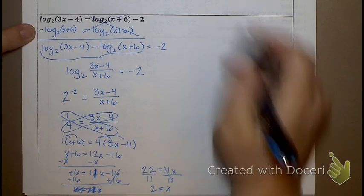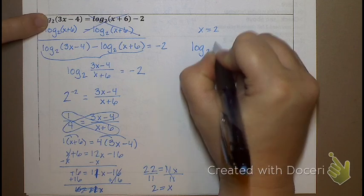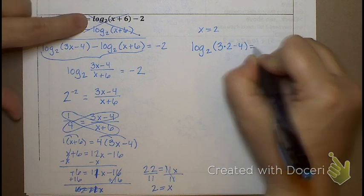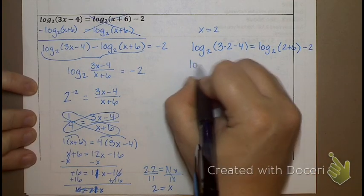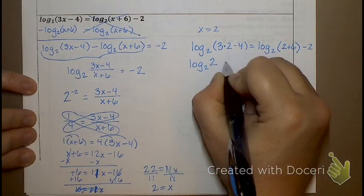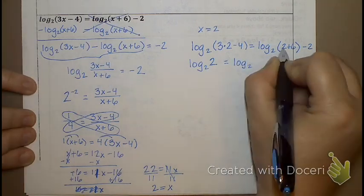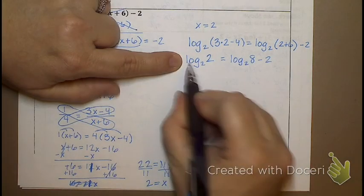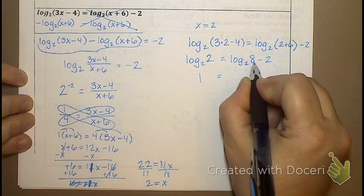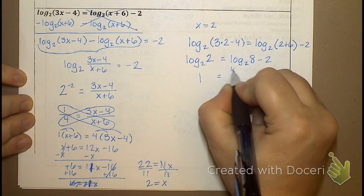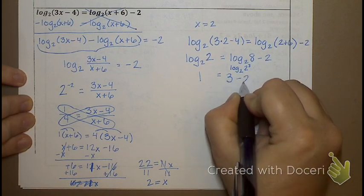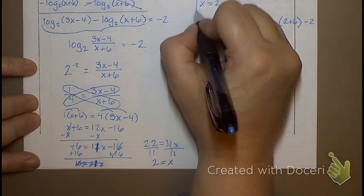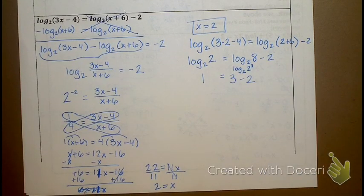Let's check x = 2: does log₂(3·2 − 4) = log₂(2 + 6) − 2? Left side: log₂(2) = 1. Right side: log₂(8) − 2 = 3 − 2 = 1. It checks out — x = 2 is a valid answer. I'll go ahead and pass out the homework, which is worksheet 16.2a.